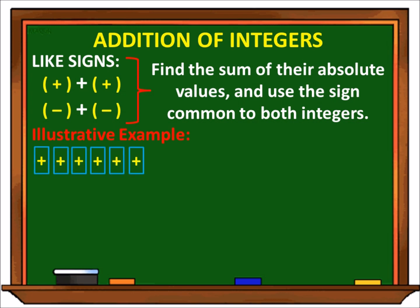Para sa illustrative example, halimbawa meron tayong 6 na positive na tiles plus 3 positive na tiles. Ang given natin ngayon ay positive 6 at positive 3. Ang gagawin lang natin dito ay kukopihin lang natin yung common sign — yung positive na sign — dahil pareha silang positive, at i-add lang natin yung absolute values nilang dalawa. Kaya, positive 6 plus positive 3 is equal to positive 9.